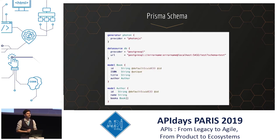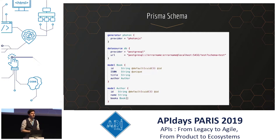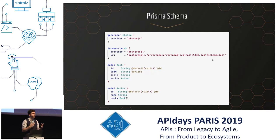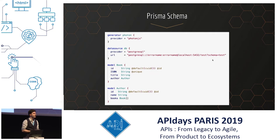This is a Prisma schema, but how do we get one? There are two ways. The first way is to manually write it. For example, if you are building a completely new application with an empty database, you can manually write the schema and Lift will shape the database accordingly. That's great for building new applications. But in our case, when we already have a database, we don't want to manually write the schema because we might introduce typos or miss relationships or directives.